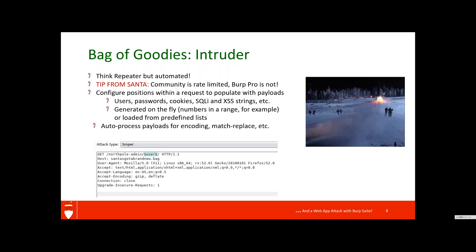What's really interesting is you have the ability to manipulate each of these payloads and do some additional processing on them. For example, let's say we're testing a web application and want to determine a list of likely active users — we have some email addresses in a file, and we know that the at-symbol needs to be URL encoded before we submit the request. Burp is able to do that for you with auto-processing of the payload. You can also do other things like match and replace.